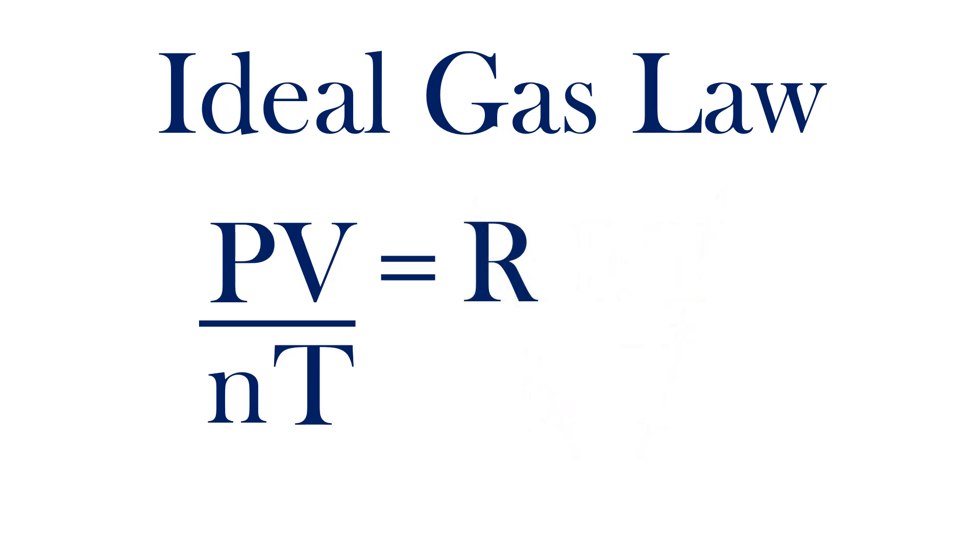As you can imagine, if these variables change, the ratio of PV over nT must still equal R.